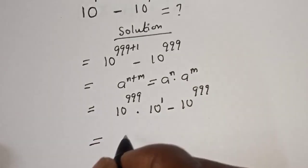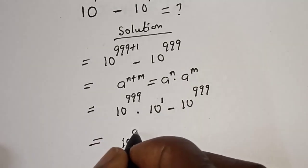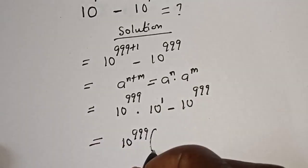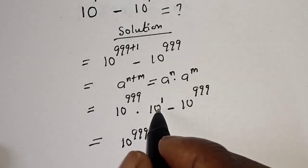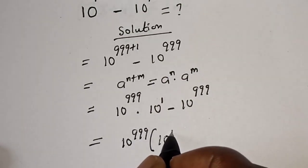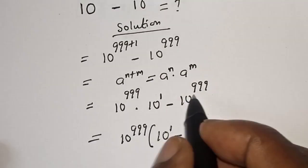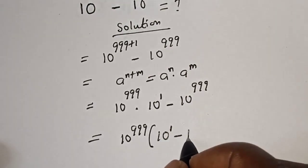Then this is equal to: 10 raised to power 999 is common, let's bring it out. In the bracket, we have 10 raised to power 1 minus 1.